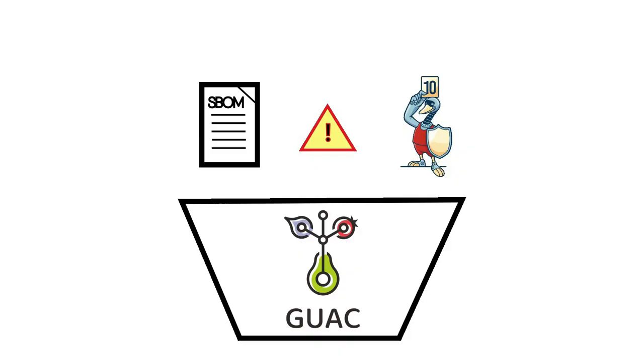So you have your Software Bill of Materials, or SBOMs, ingested into Guac. Now what? Guac enriches your SBOMs with content from reliable sources, like deps.dev. Guac can help you fill in gaps, like if your SBOMs don't include the source repository for a package, or even if it doesn't include all of the transitive dependencies.